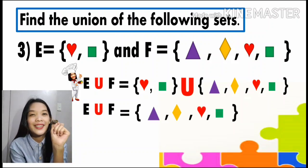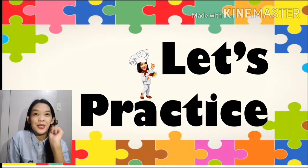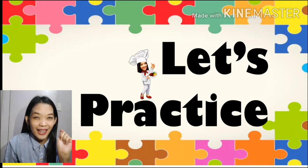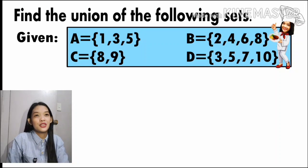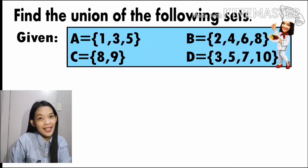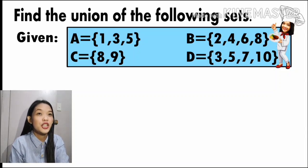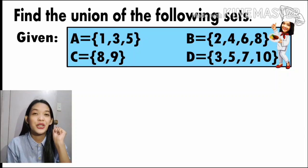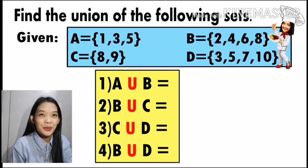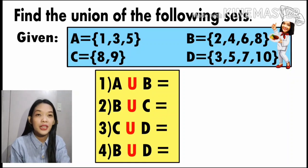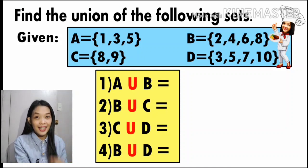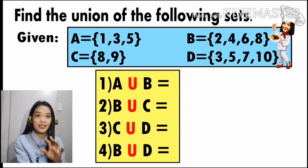You can pause the video and try to answer this. Let's practice — find the union of the following sets: set A has the elements one, three, five; set B has the elements two, four, six, eight; set C has the elements eight and nine; and set D has the elements three, five, seven, and ten. You are going to answer: number one A union B, number two B union C, number three C union D, and number four B union D. Remember, combine the elements and if there are similar elements write them as one.